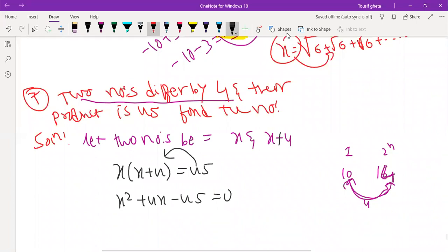Minus 45 I need 9, 5. So 9 minus 5 will get plus 4. x square plus 9x minus 5x minus 45. So take common.